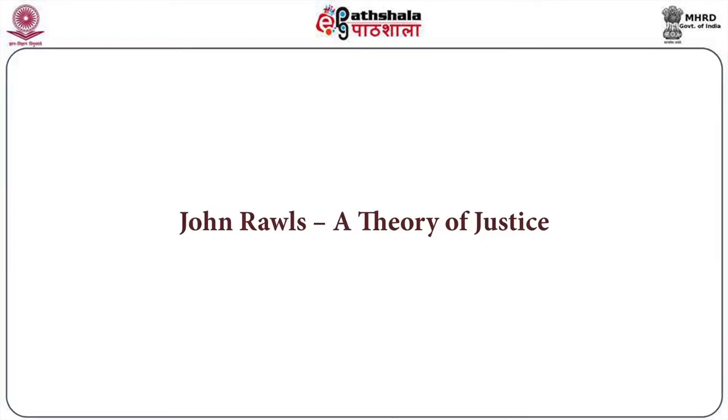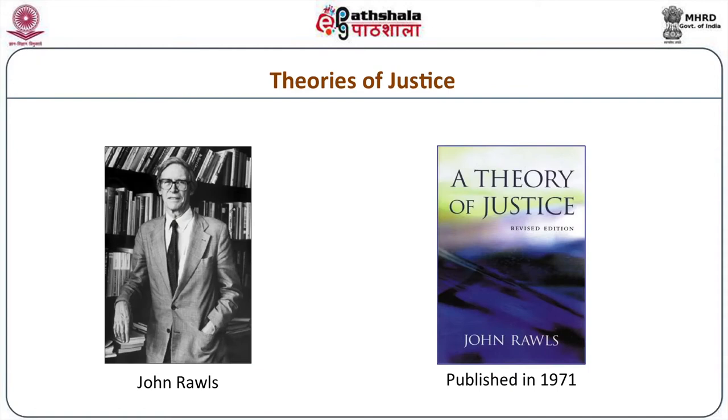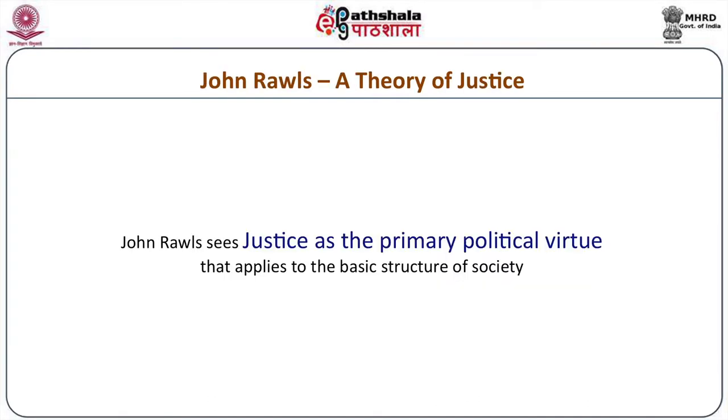We've got all kinds of different theories of justice arising from all different geographical locations and historical eras. But two of the most prominent ones for contemporary liberal thinking about what justice is are to be found in John Rawls and Ronald Dworkin. John Rawls presents his theory of justice in a masterpiece published in 1971 called A Theory of Justice. Rawls sees justice as a primary political virtue that applies to the basic structure of society, which refers to the basic political institutions of any society for that society to be regarded as a political community.